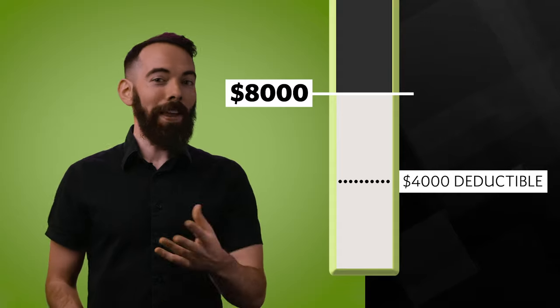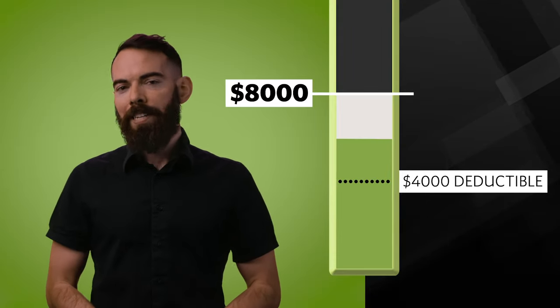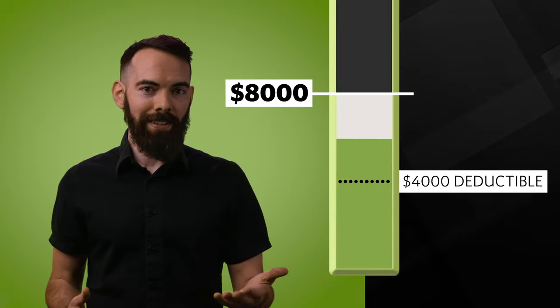Now for the ease of math, let's say you have a 50-50 policy with a $4,000 deductible, and you just had an $8,000 ER visit. You pay the first $4,000 to meet your deductible, and then the second $4,000 would be split 50-50, meaning you'd pay $2,000 of that.